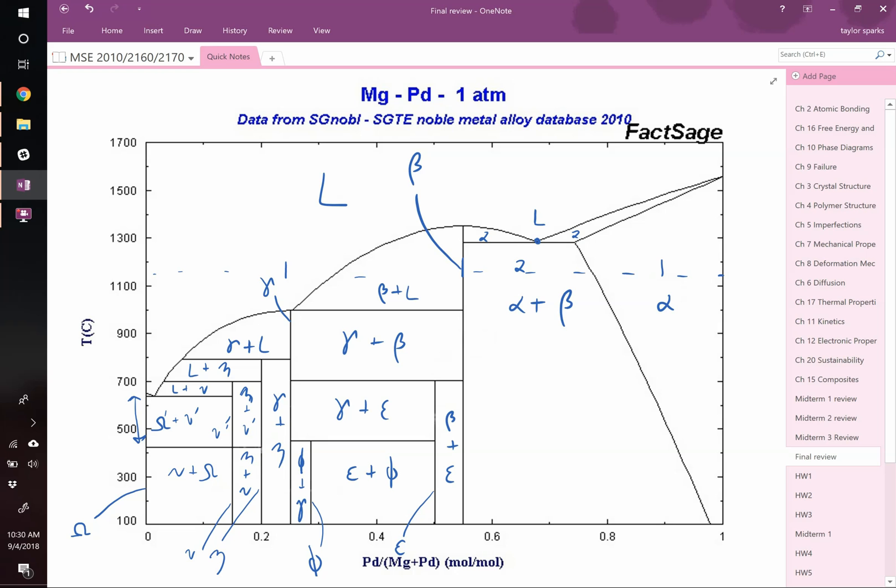Now, what interesting reactions are there on this phase diagram? We could label those as well. Clearly, we have our eutectic point over here. We have this region of maximum solid solubility, just over 20%, almost like 22 or 23%, right there, all that solubility.